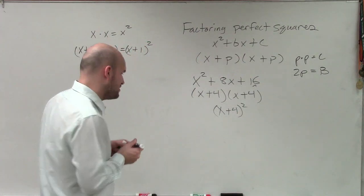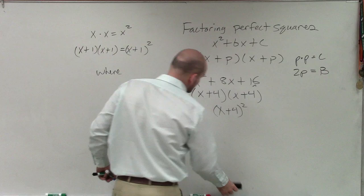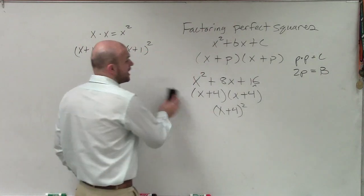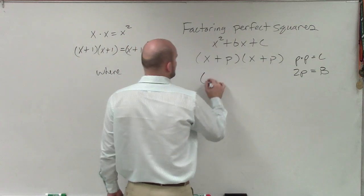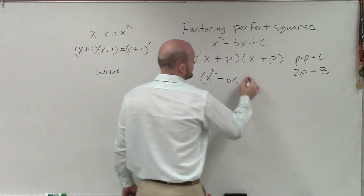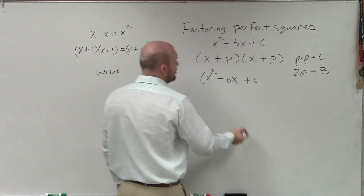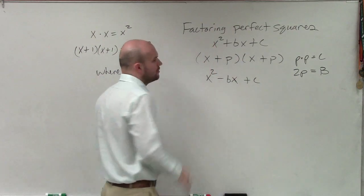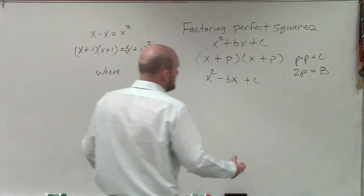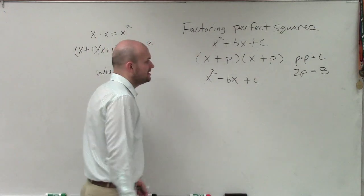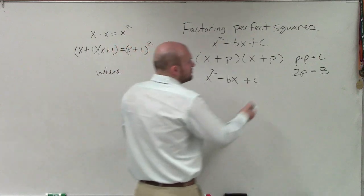Now, it's also important to notice that perfect square trinomials are not always going to be in a positive format. We could also have perfect square trinomials that are negative. But it's important for us to look at this and notice that if I'm going to have two factors that are exactly the same negative, whenever I multiply them, they have to give me c. So in this case, the properties are still going to apply.